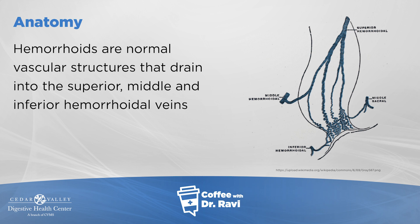The anal canal is an area right adjacent to the opening of the rectum, about 2.5 to 4 centimeters long. There are different types of lining: skin lining, transition lining, and glandular epithelium. There's a structure called the dentate line, which helps us define what's internal and what's external. Within this anal canal, there are normal vascular structures called hemorrhoids — think of them as a gasket lining an opening to keep things together.